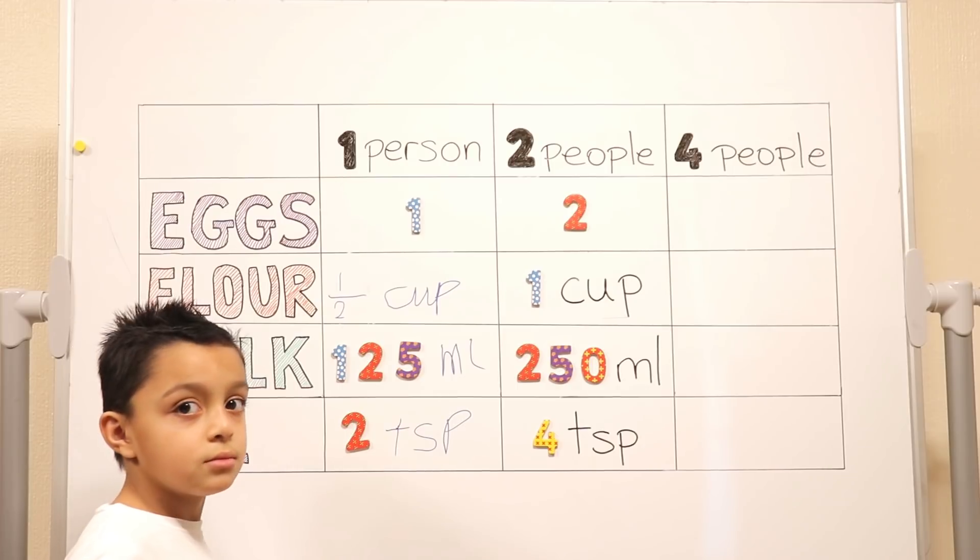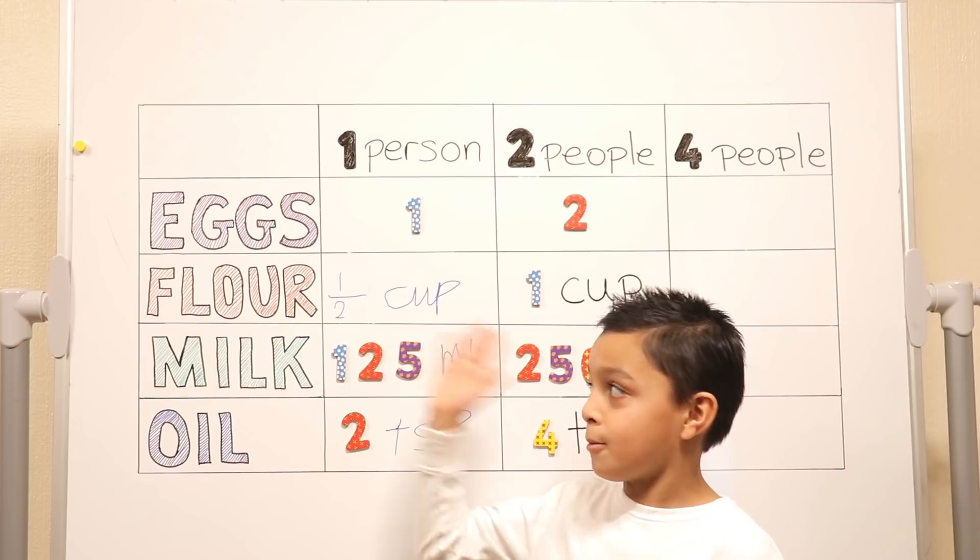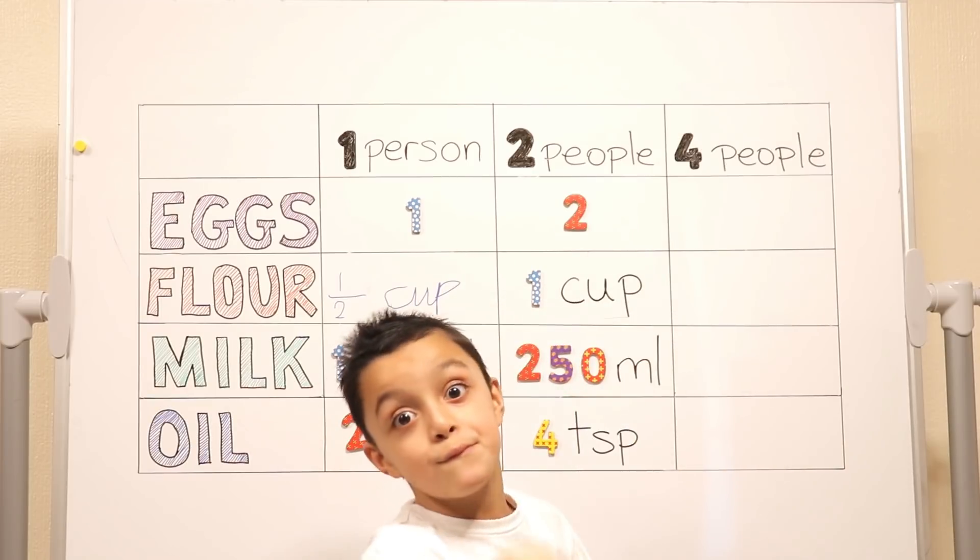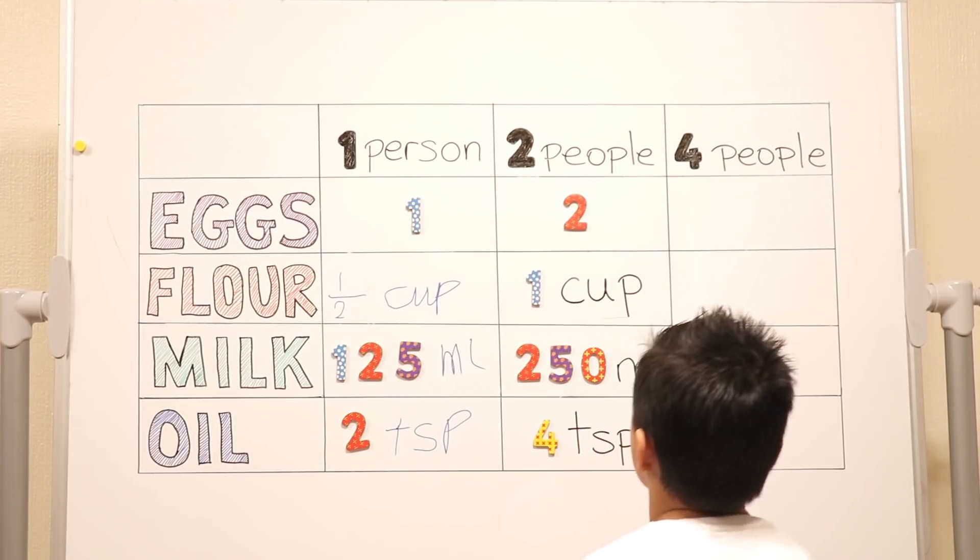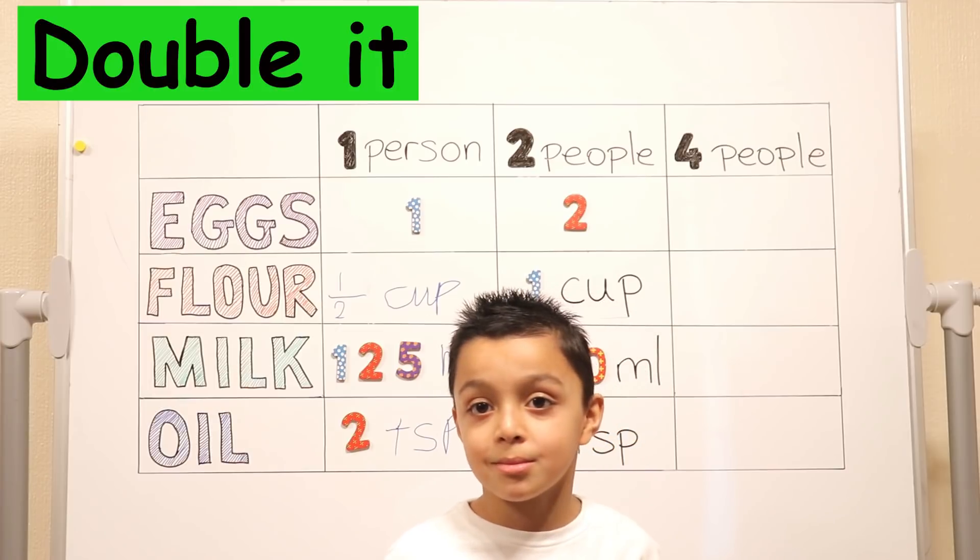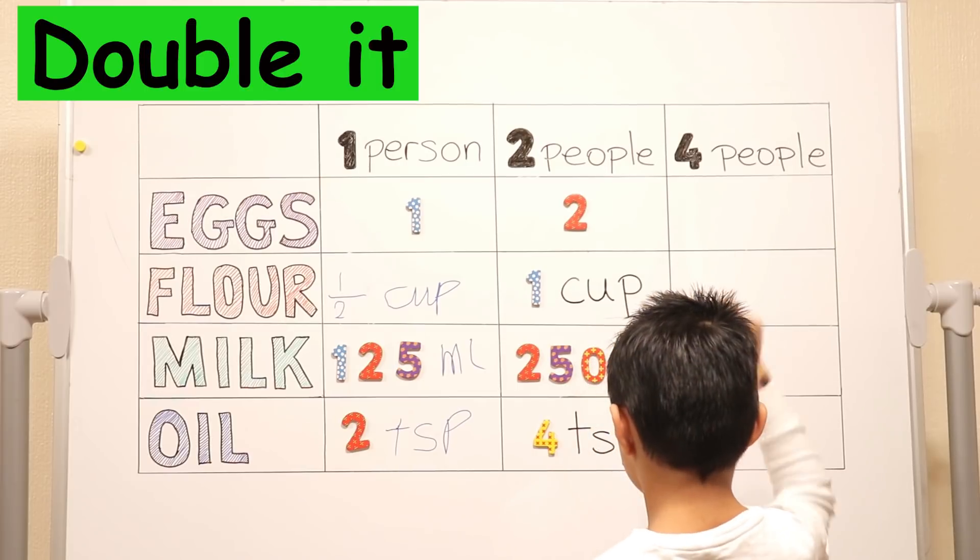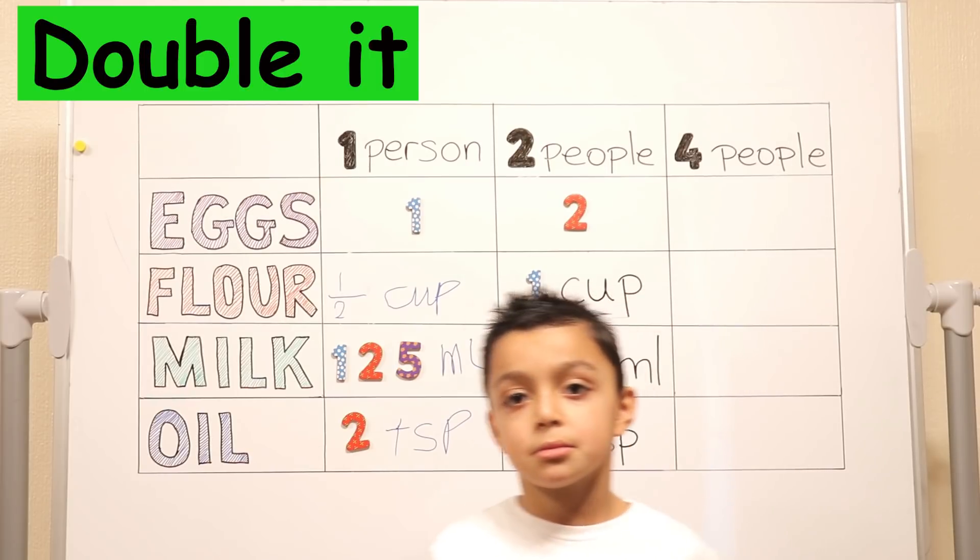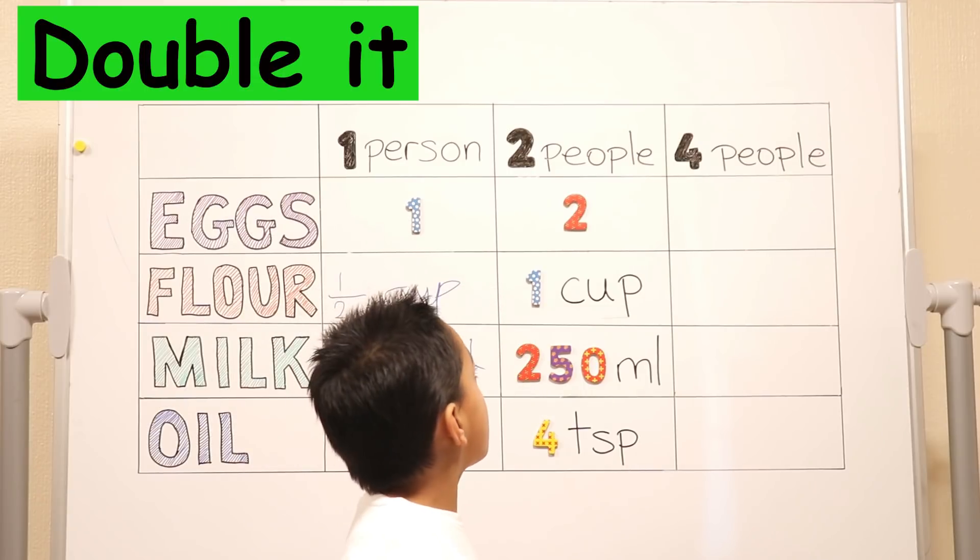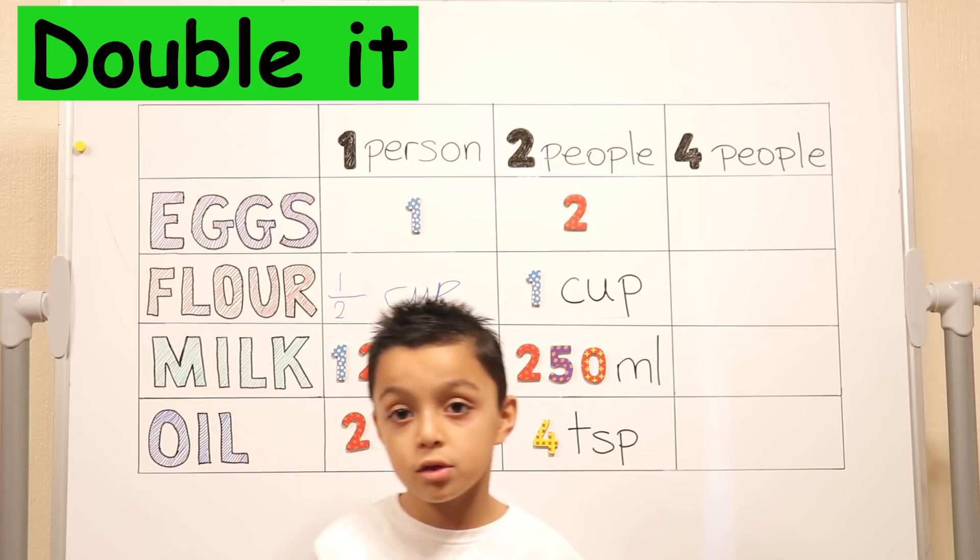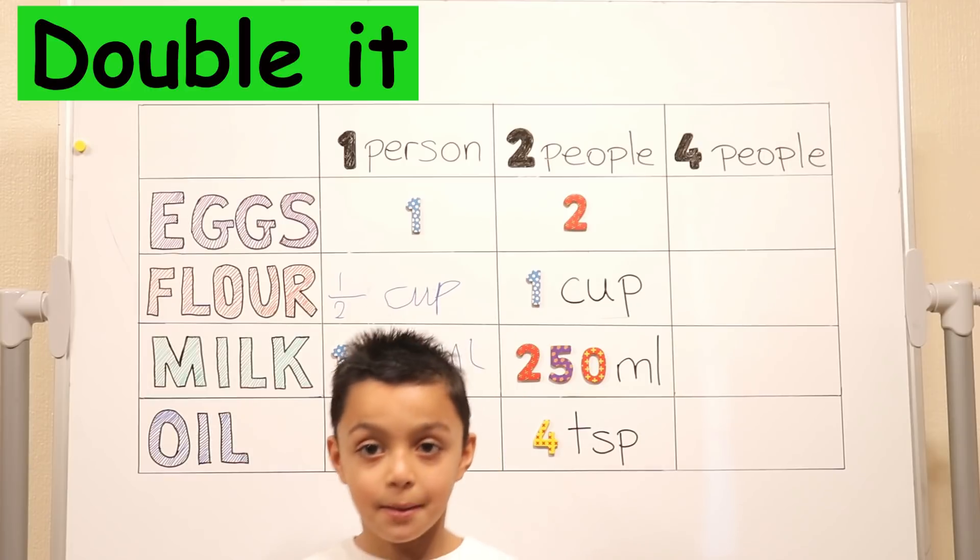Now there's another column there. What is it asking us? How much things would you need to make the dough for four people? Right, how much ingredients. How are you going to work this out? There are different ways. Double it. Which one are you going to double? Two and that one and that one and that one. So you're going to double the ingredients for two people. Why? Why did you choose to double it? Because two is half of four. So we can double it because double two is four. Excellent. That's what I wanted to hear.